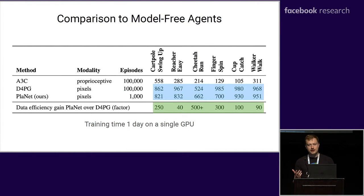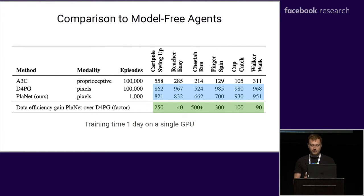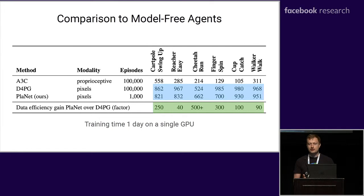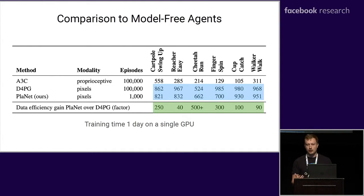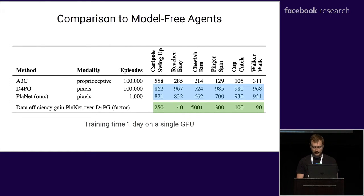In comparison to state-of-the-art model-free algorithms, Planet matches the performance of D4PG and clearly outperforms A3C on all these tasks. At the same time, Planet uses 200 times fewer episodes, allowing to solve these tasks in less than 1,000 episodes rather than almost 100,000 episodes. The training time is one day on a single GPU for all these methods.